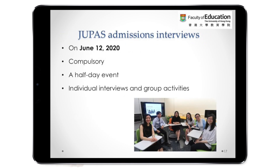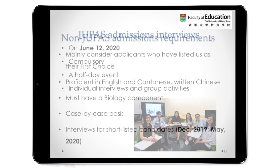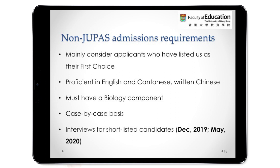The JUPAS interview will be on June 12th, 2020. It is compulsory, a half-day event, and will include individual and group interviews. For non-JUPAS applicants, we mainly consider those who have listed us as their first choice. They must be proficient in English and Cantonese and should be able to write Chinese. They must also have a biology component, and are considered on a case-by-case basis. We will provide shortlisted candidates with interviews in December and in May of next year.